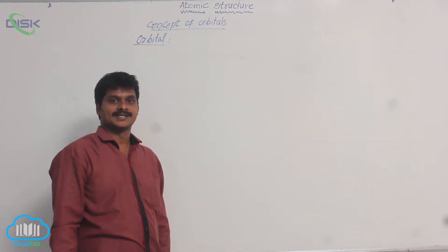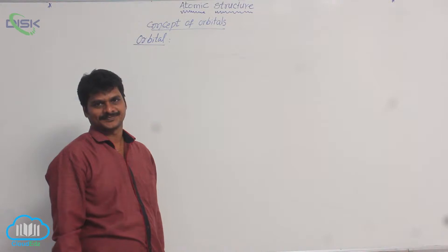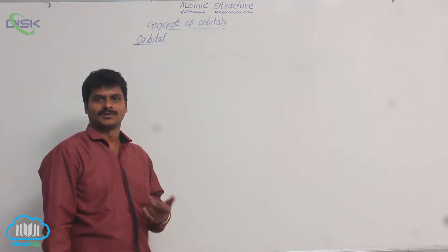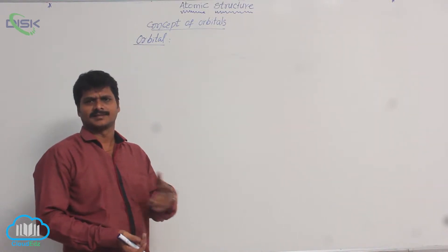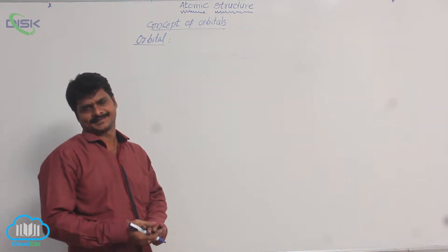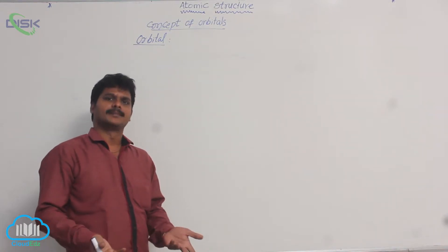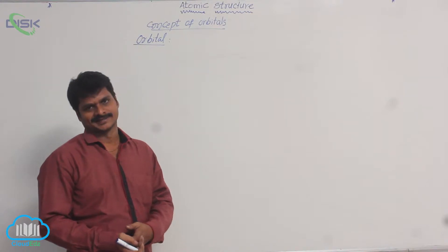Previously, I have discussed about orbit. What is orbit? In the Bohr's theory and Sommerfeld theory, in some other atomic models, I have discussed about orbit. Orbit is the path followed by the electron around the nucleus.